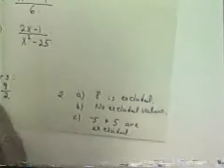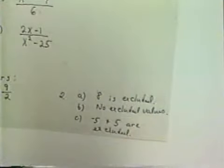Now let's look at the answers for the second one. 2a, 8 is an excluded value. To b, there are no excluded values. Your denominator is 6. 6 can never be 0, so you have no excluded values. For c, negative 5 and 5 are both excluded values.